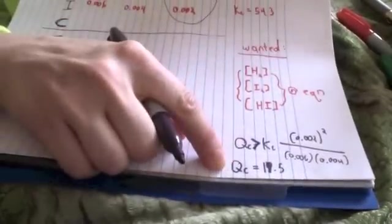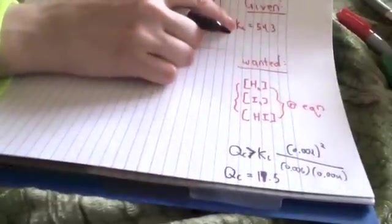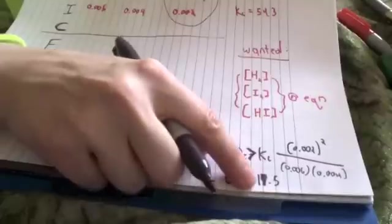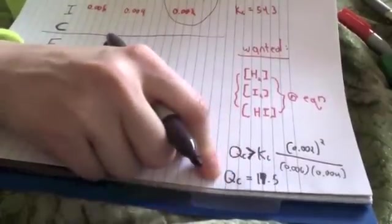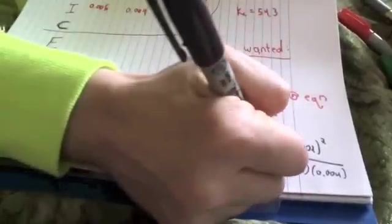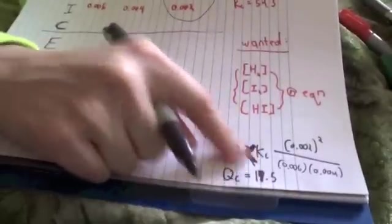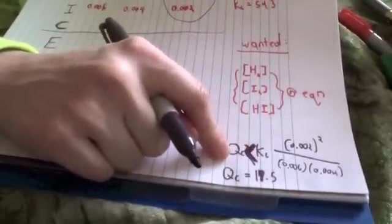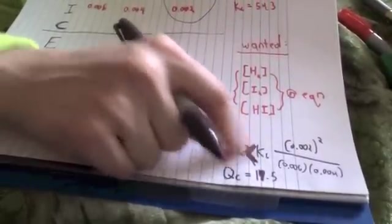So now you have to do the comparison for me. Qc and Kc. Kc is 54.3. Qc is 19.5. Qc, in this case, is less than, I will fix my arrow, is less than Kc, right? What does that mean? If Qc is less than Kc, then that means I have too many reactants, too high concentration of reactants, and the reaction is going in the forward direction.